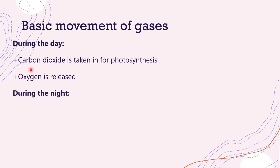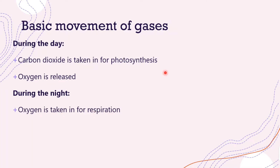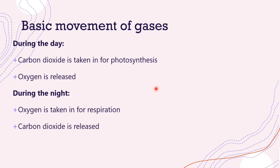During the night, oxygen is taken into the plant for respiration because photosynthesis isn't happening during the night, so there is no oxygen being produced to provide the cells for respiration. And carbon dioxide is being released because it isn't being used up by the plant in photosynthesis, so it's in excess in the plant.